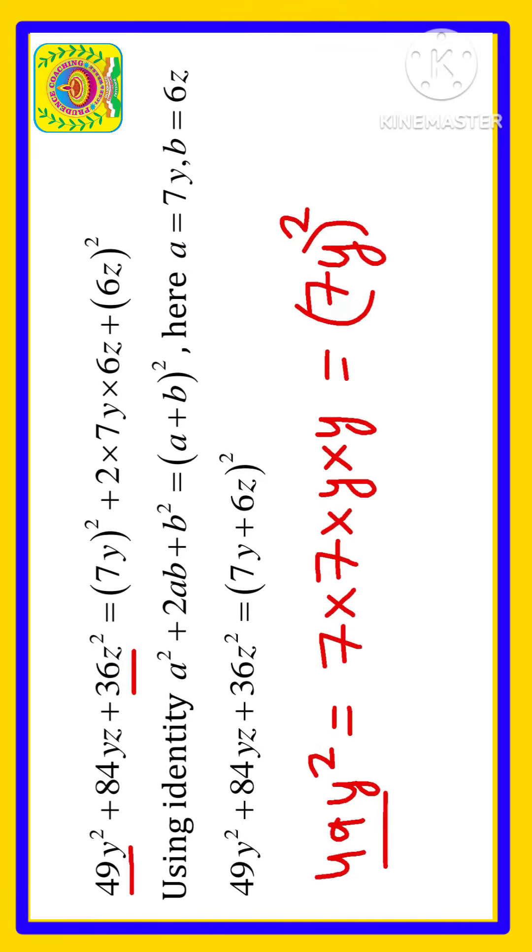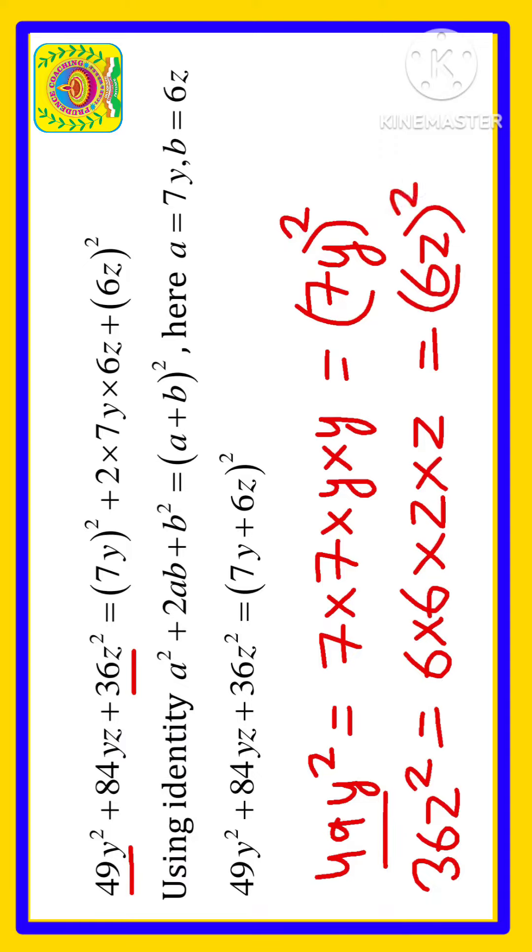On the other side here we have 36z². 36 can be written as 6 into 6 and we have z twice, so this can be written as (6z)². So here this one is a² where a is 7y, and here b is 6z, that is (6z)².